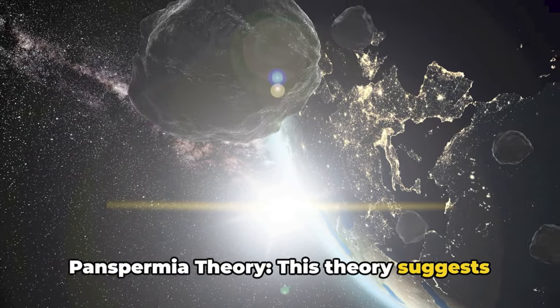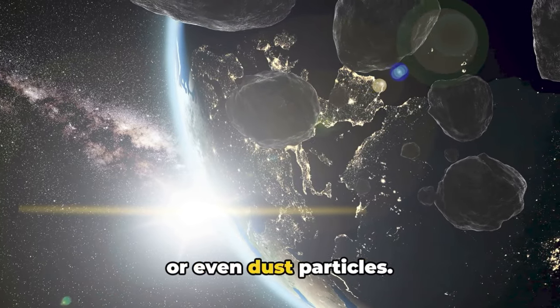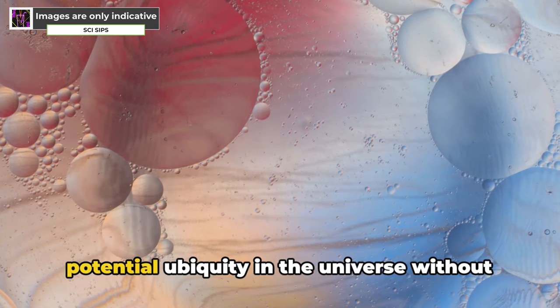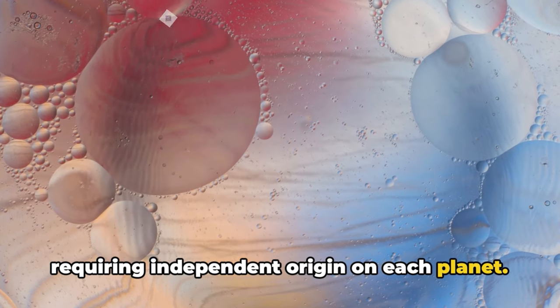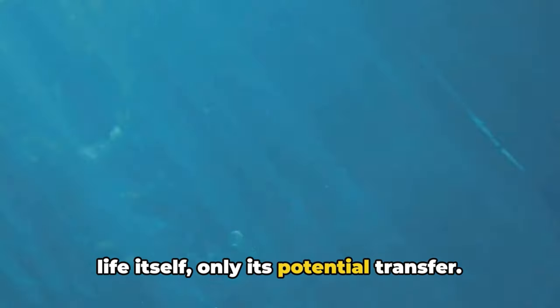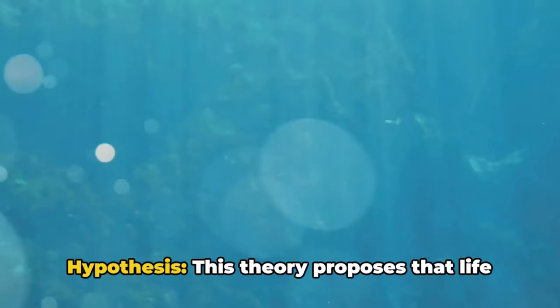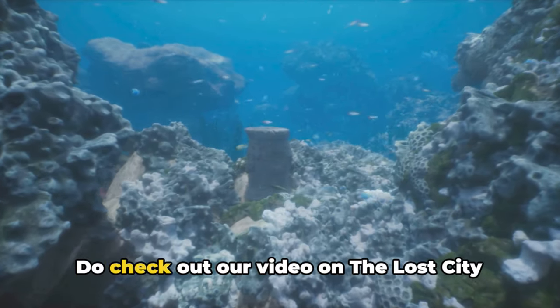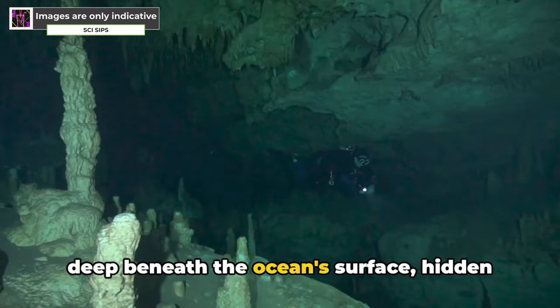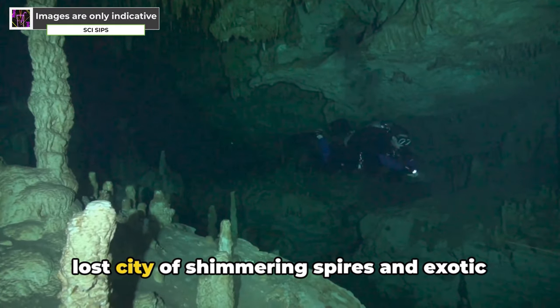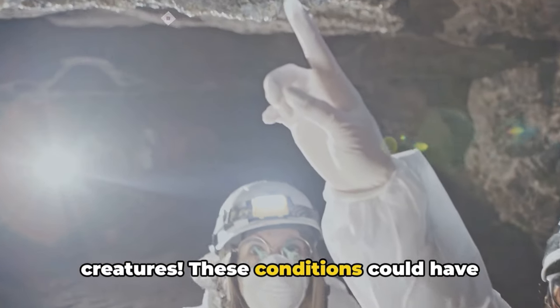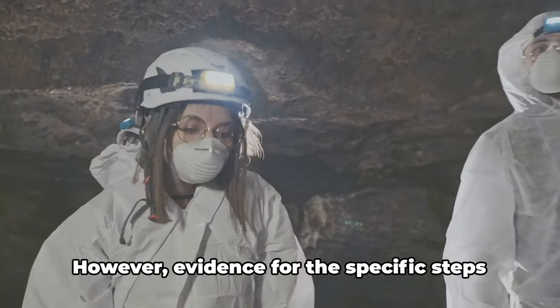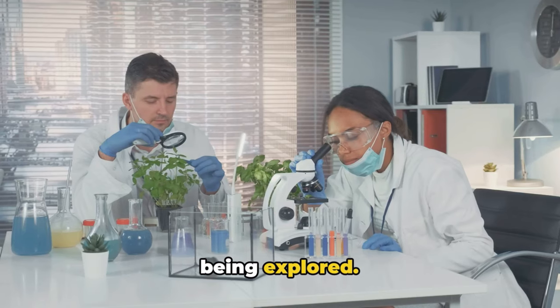Panspermia theory. This theory suggests life exists throughout the universe, carried by meteoroids, asteroids, comets, or even dust particles. These life-bearing particles could have seeded Earth or other planets with the building blocks of life. The theory of panspermia explains life's potential ubiquity in the universe without requiring independent origin on each planet. However, it doesn't explain the origin of life itself, only its potential transfer. Then there's the deep-sea vent hypothesis. This theory proposes that life emerged near deep-sea hydrothermal vents, where mineral-rich hot water spews from the Earth's crust. Do check out our video on the Lost City hydrothermal fields, where we explore how deep beneath the ocean surface, hidden in an underwater mountain range, lies a lost city of shimmering spires and exotic creatures. These conditions could have provided an energy source for chemical reactions through chemosynthesis. Minerals could have acted as catalysts for early life processes. However, evidence for the specific steps leading to life from these vents is still being explored.